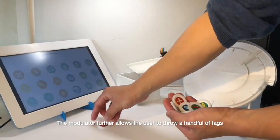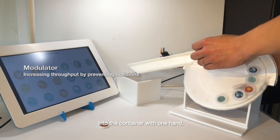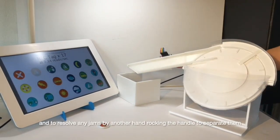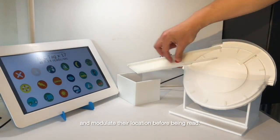The funnel allows the user to throw tags into the filter to get each tag through quickly. The modulator further allows the user to throw a handful of tags into the container with one hand to identify them by using another hand rocking the handle to separate them and modulate their location before being read.